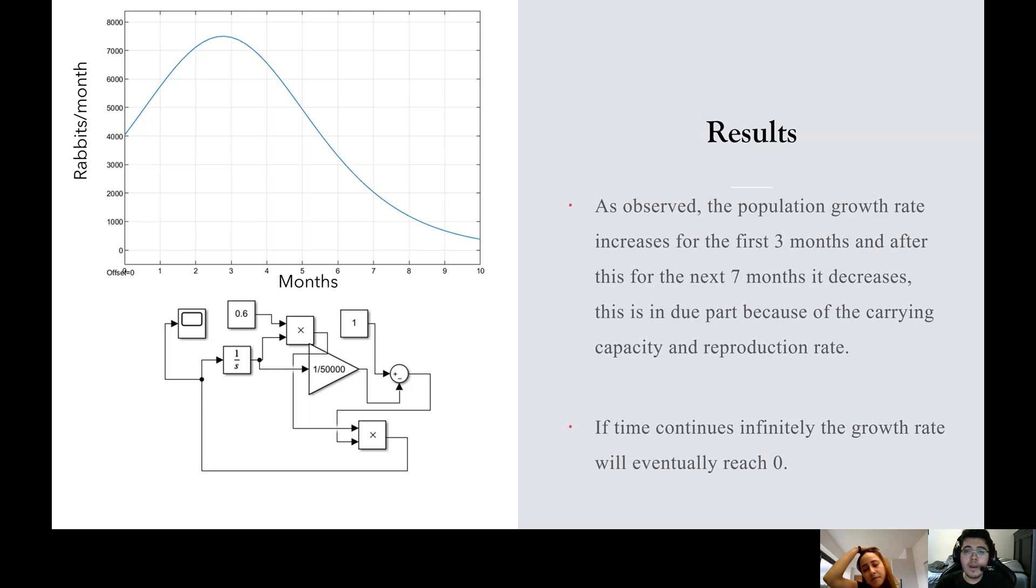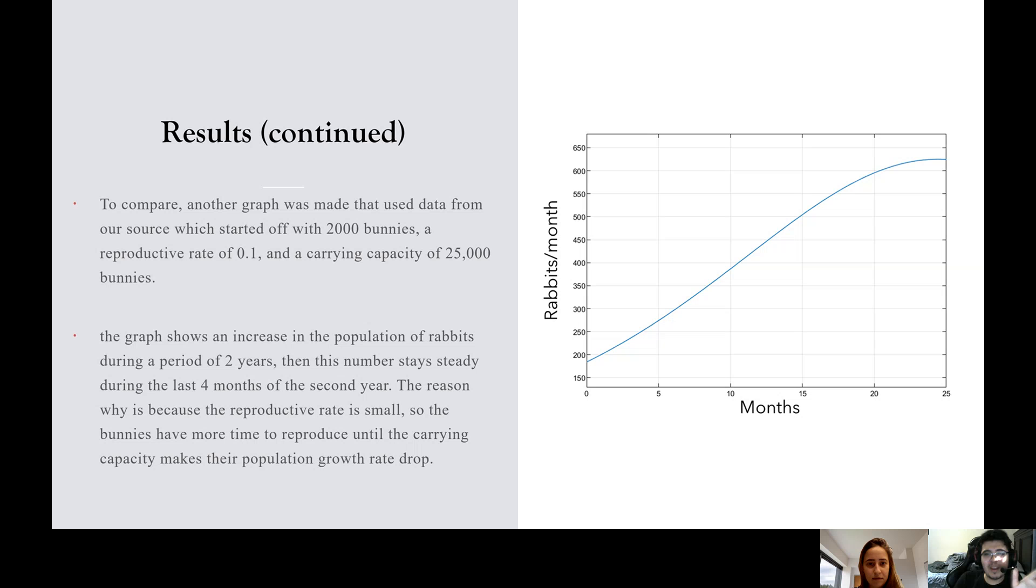To compare this, we decided to use the values from the book, which was 2000 bunnies to start with, and the reproductive rate was 0.1, and the carrying capacity was 25,000. If you see from the graph, the time used was actually larger because the reproductive rate was a much smaller value compared to what we tested, and proportionally the starting bunnies compared to the carrying capacity is a smaller value. So the bunnies are allowed to reproduce for longer periods of time until they reach the carrying capacity. As you can see, it goes up and becomes a little steady, but it doesn't exactly drop yet because it's going to take a longer time than the time listed here.